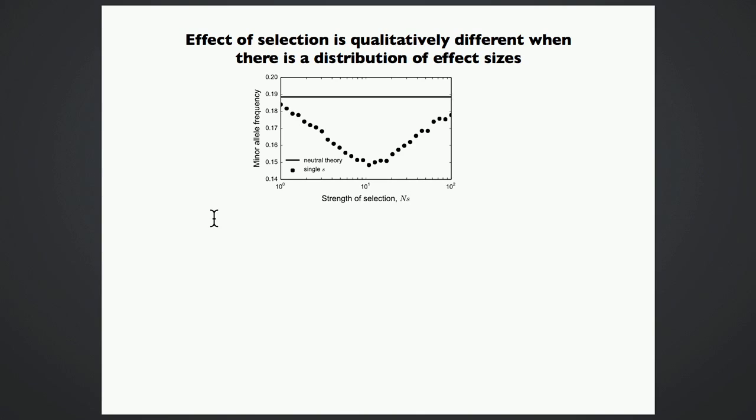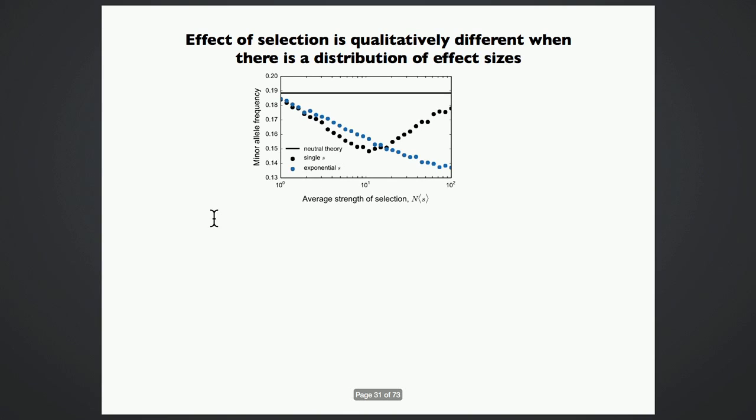So for example, if we look at how severe these distortions are as a function of the effect of selection, in a single fitness effect model, we find that the distortions are most severe at intermediate fitnesses. Now, if we looked at an alternative model where the distribution of effect sizes is exponential, we find that the biggest distortions actually happen at the strongest fitnesses. This is something we can formally prove, but I don't have time to go into this now. The exponential distribution never reaches the background selection limit, not even in infinite population sizes.